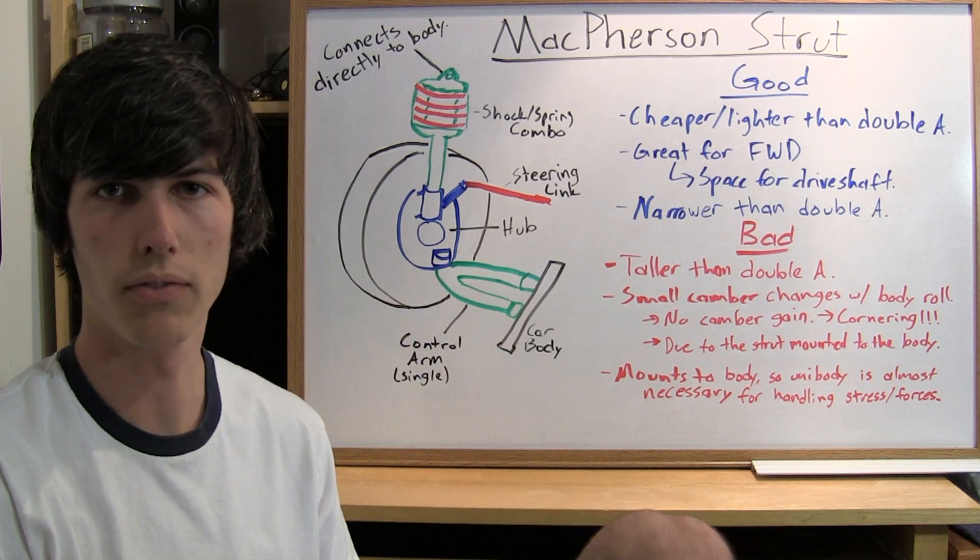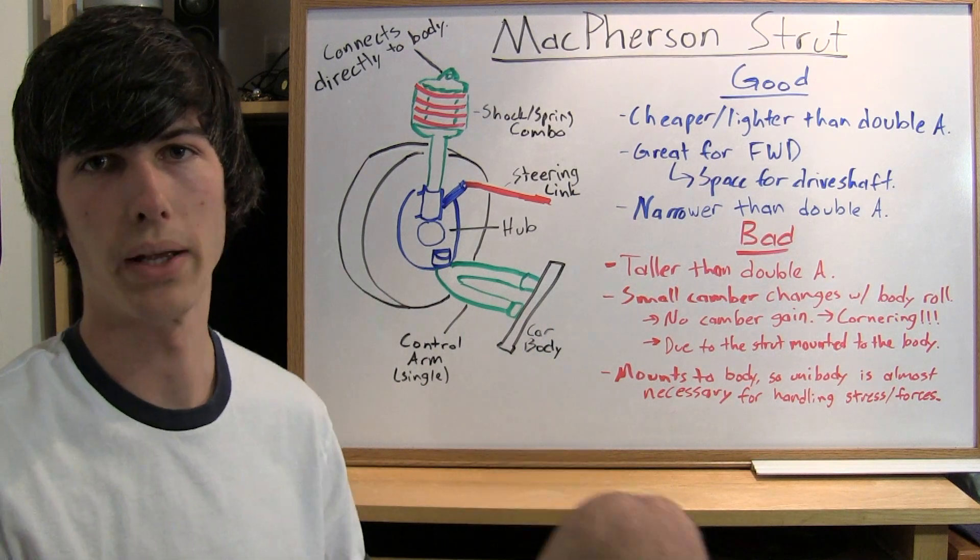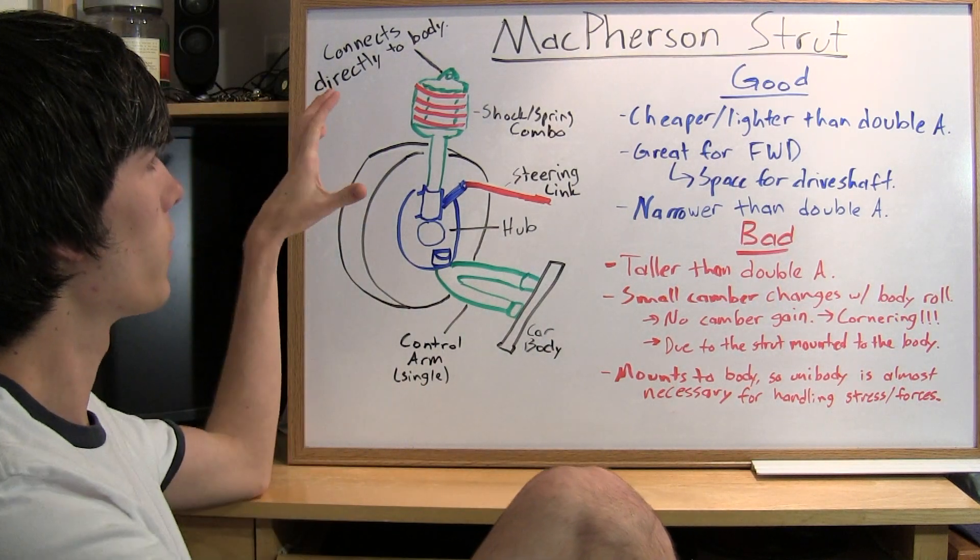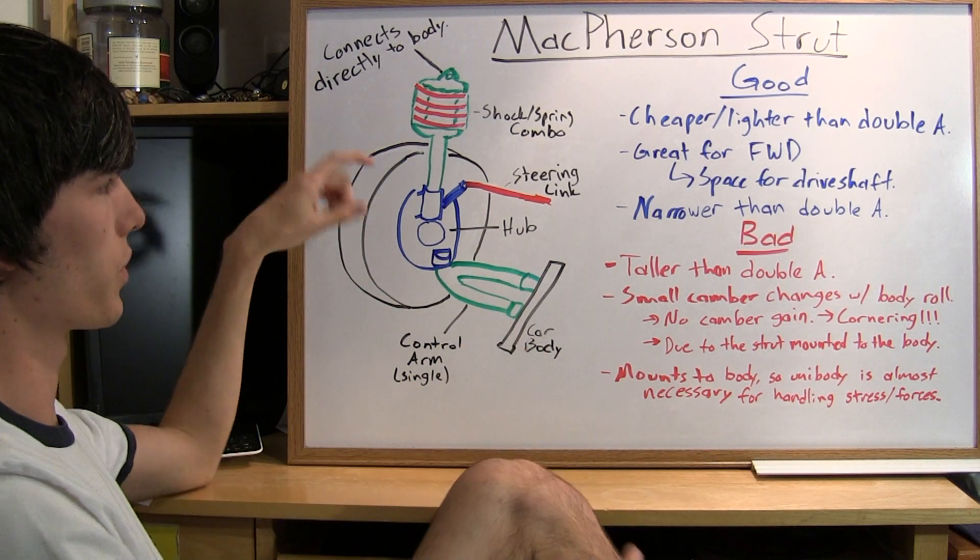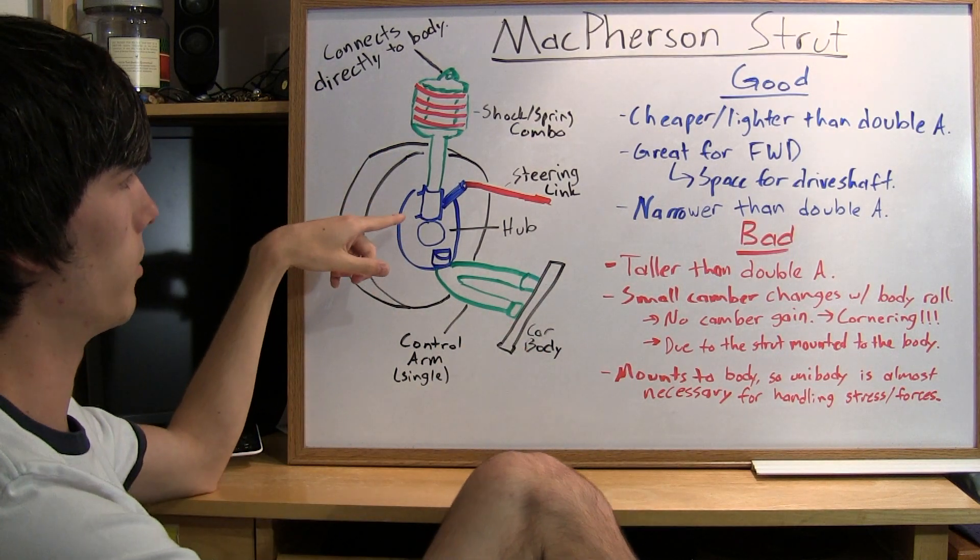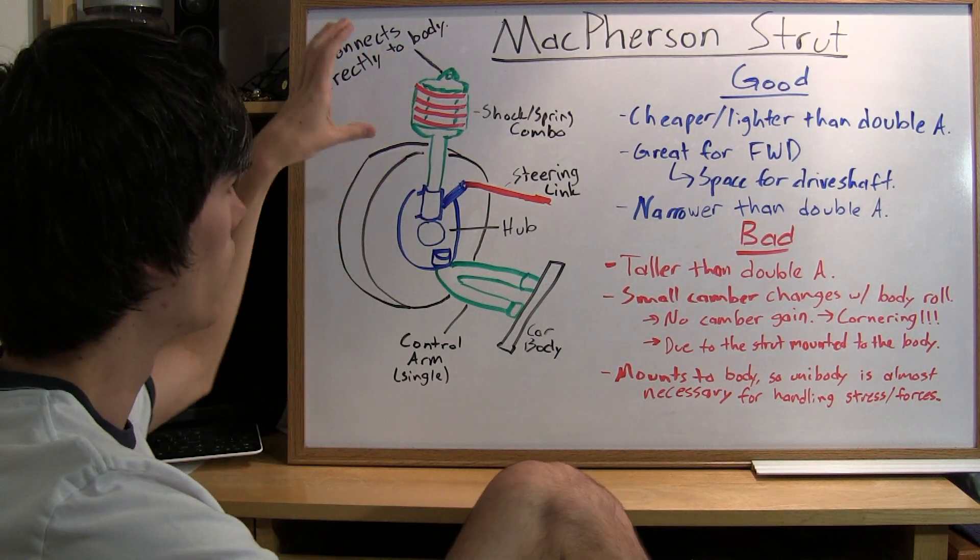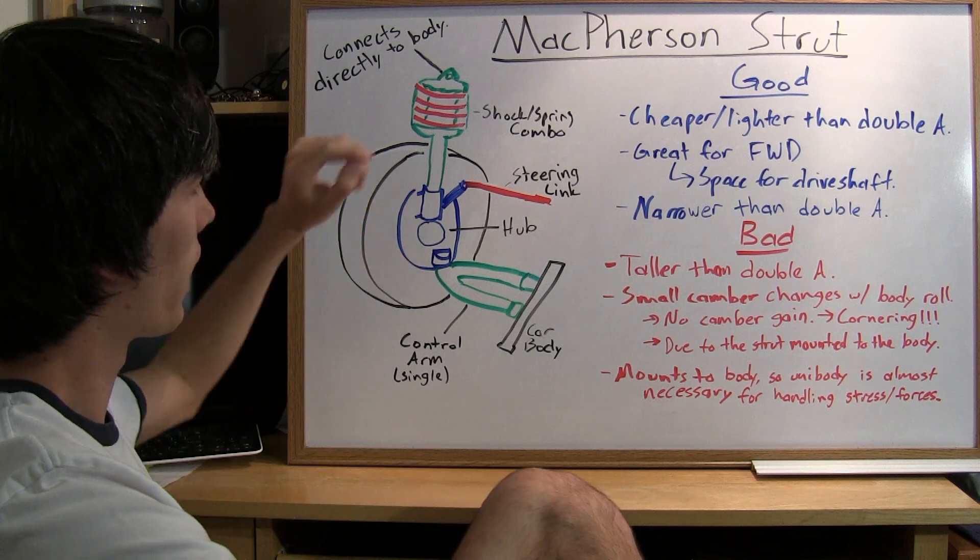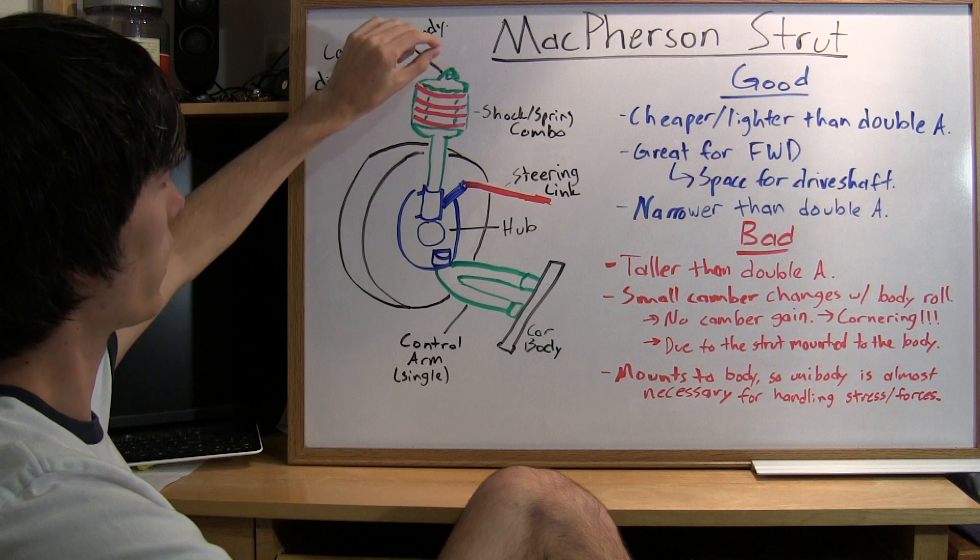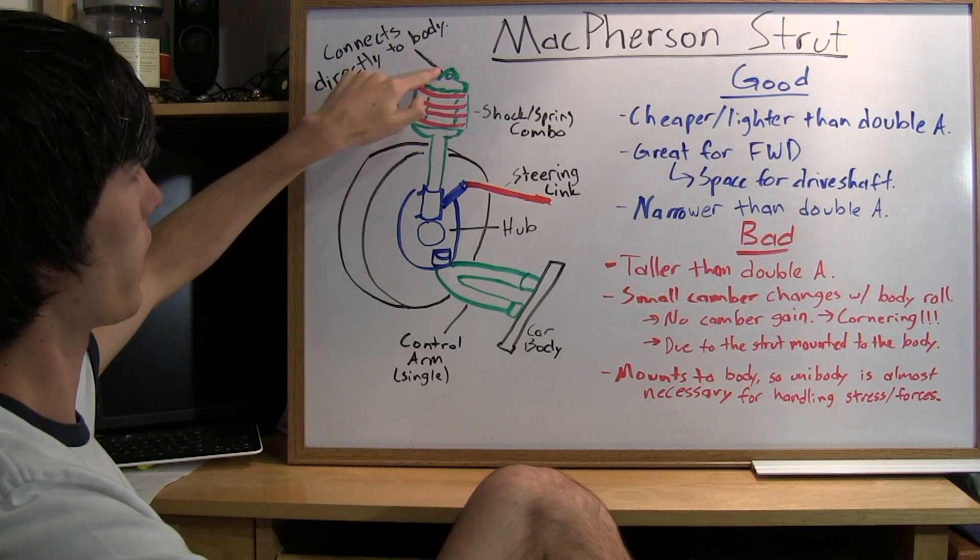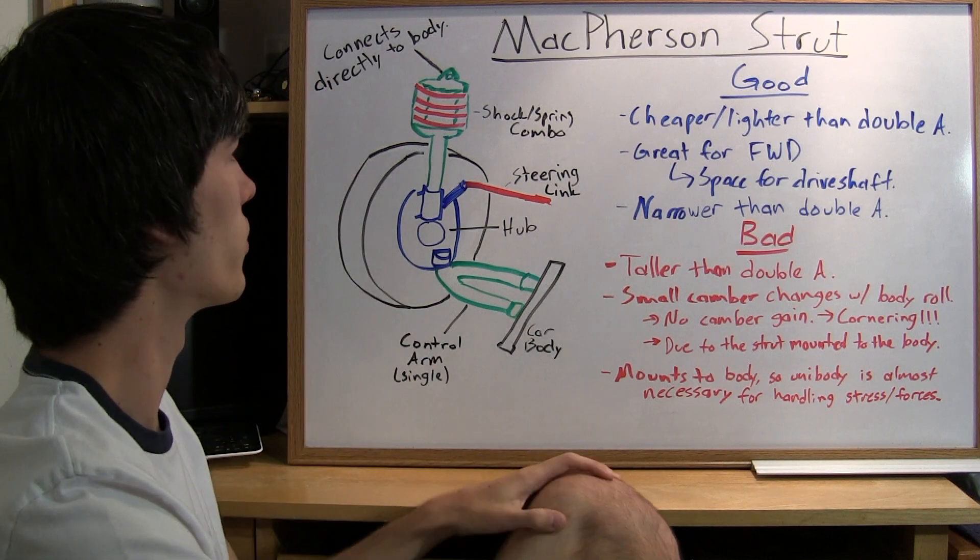The next video I'll be doing is on McPherson strut, which is the next segment in this suspension series. The basic idea is you've got a single control arm which connects to the bottom of the wheel hub, and then you have a shock spring combination which connects to the top of the wheel hub. This shock spring, or strut, is connected directly to the body at the top. That's what separates the McPherson strut from other suspension setups.